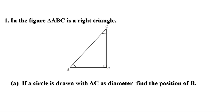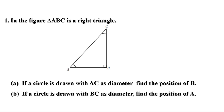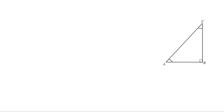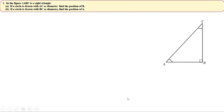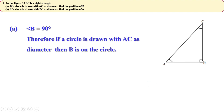In the figure, triangle ABC is a right triangle. If a circle is drawn with AC as diameter, find the position of B. If a circle is drawn with BC as diameter, find the position of A. Here angle B is 90 degrees. Therefore, if we draw a circle with AC as diameter, the point B is on the circle. Now since angle B is 90 degrees, the other two angles are less than 90 degrees. So if we draw a circle with BC as diameter, the point A is outside the circle.